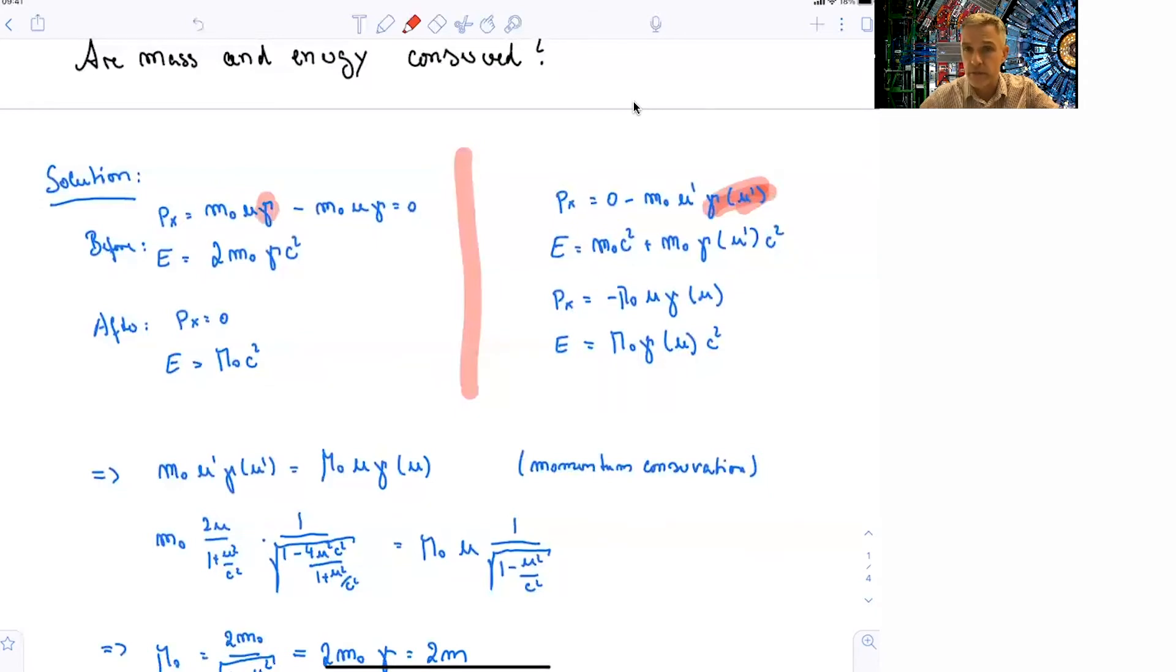And the energy is the rest mass of the particle at rest plus the mass times gamma times c square of the second particle. After the collision, the particle has some velocity u. And so the momentum in x direction is minus large M times u times gamma of u again.